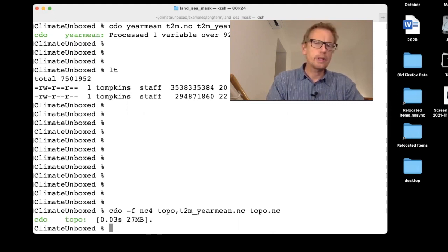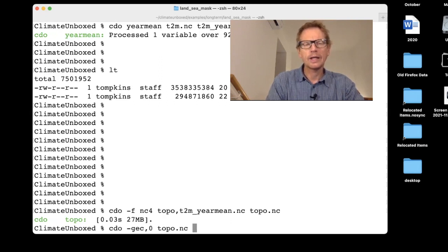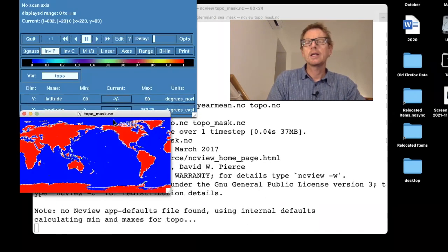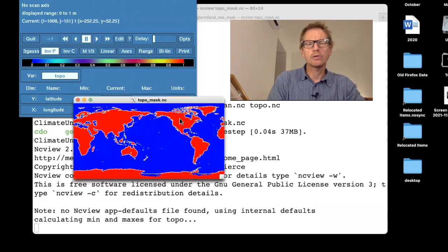So we're going to have CDO minus F NC4 for NetCDF4 format. And then topo comma T2M and then topo. So this is already being projected onto the same grid as the input data. And if you recall, we do CDO and then we have greater than equal to a constant, topo. And then we're going to have topo mask.